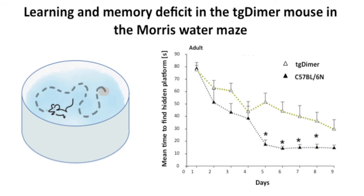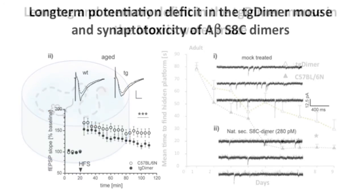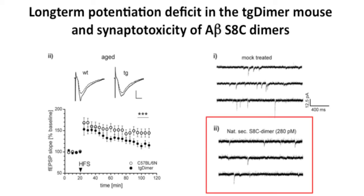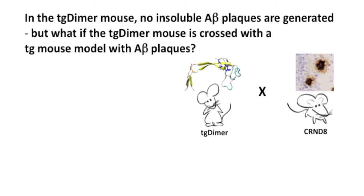However, the TG dimer mouse line shows deficits in the Morris water maze, a test for learning and memory, similar to cognitive deficits reported in other mouse models for Alzheimer's disease. Consistent with these findings, we report deficits in long-term potentiation as well as synaptotoxicity for A-beta S8C dimers.